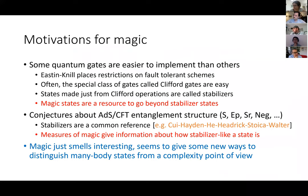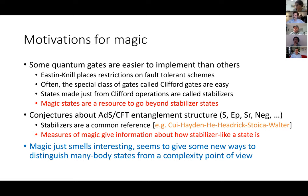Let's talk about motivations for magic. If you talk to experimentalists, you'll learn that not all gates are created equal — some of them are easier to implement than others, depending on the situation. This is not just a practical dirty experimental fact. There are things like the Eastin-Knill theorem, which tells you that fault tolerance schemes are constrained in certain ways — you can't implement all your gates in a nice way.